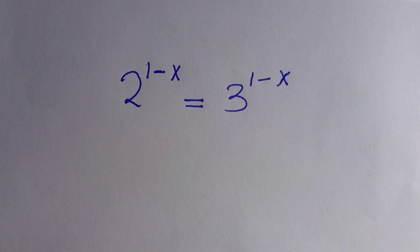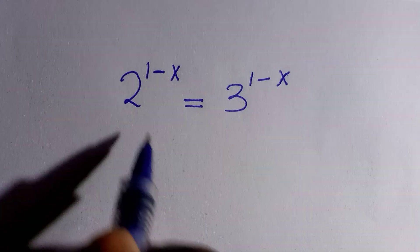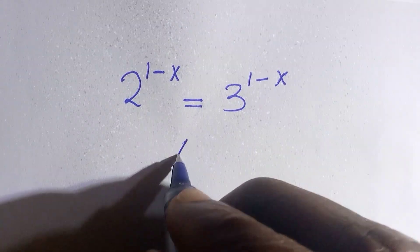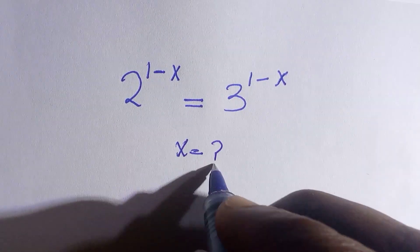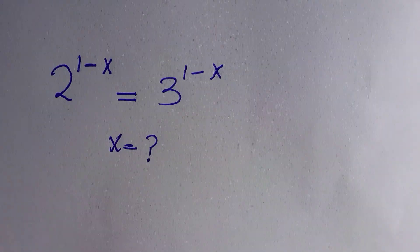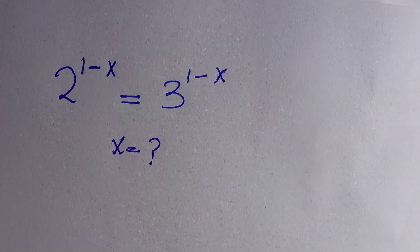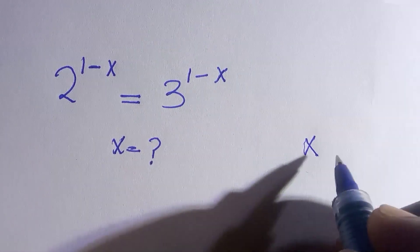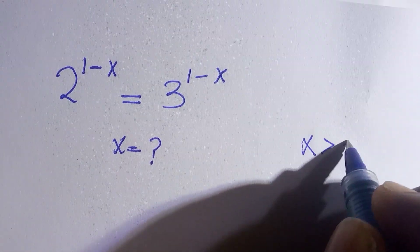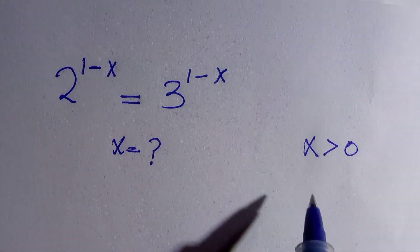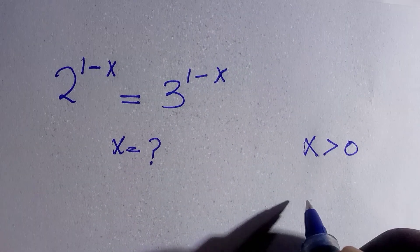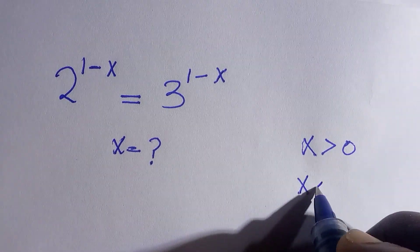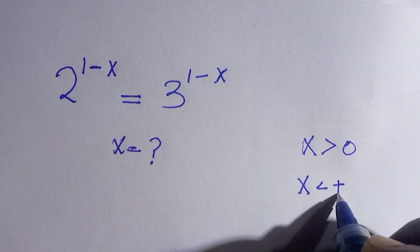Welcome to another video. We want to solve for x in these equations. What are the conditions attached to this? The condition on x is that x here is greater than 0, and x is also less than positive infinity.